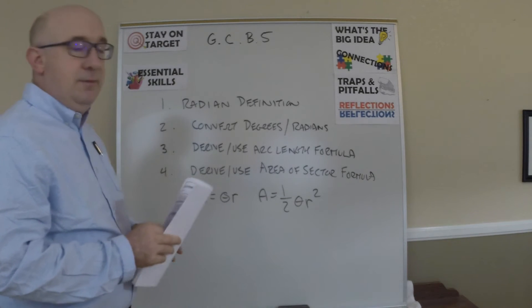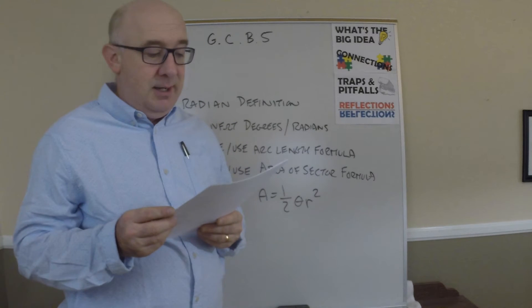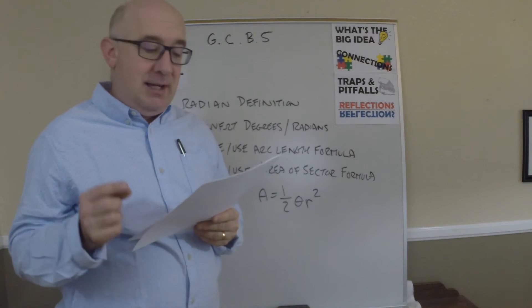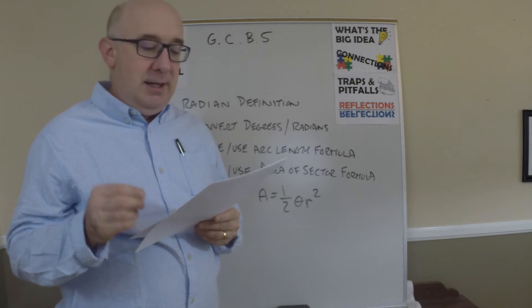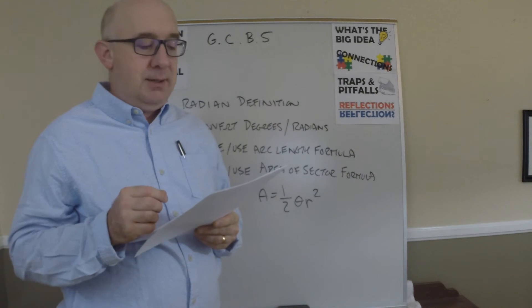Basically, in this objective, let me read it to you. It says, derive using similarity the fact that the length of the arc intercepted by an angle is proportional to the radius.